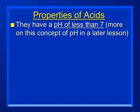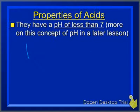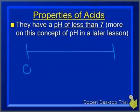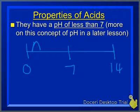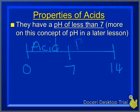Acids have a pH smaller than seven. Looking at the pH scale, zero is at one end and 14 at the other, with seven in the middle representing neutral. Anything between zero and seven is termed an acid, and anything between seven and fourteen is a base.